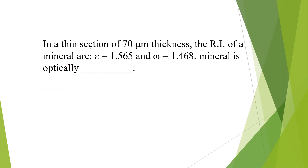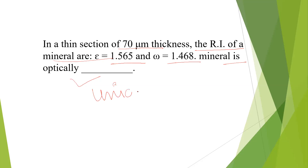Again, in a thin section of 70 micrometer thickness, the refractive index of a mineral has two values. We need to determine whether the mineral is optically positive or negative, and whether it is uniaxial or biaxial. Since we have only two refractive indices (no alpha, beta, gamma — just two), we can say this is a uniaxial mineral.